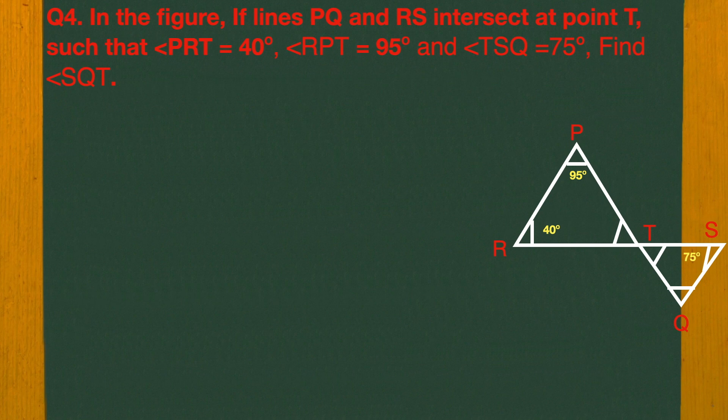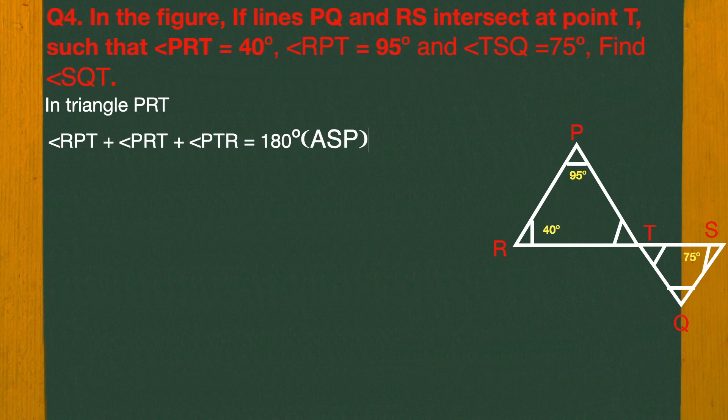Find angle SQT. To find SQT, we work with triangle PRT. In triangle PRT, angle RPT plus angle PRT plus angle PTR equals 180 degrees, because of the angle sum property.